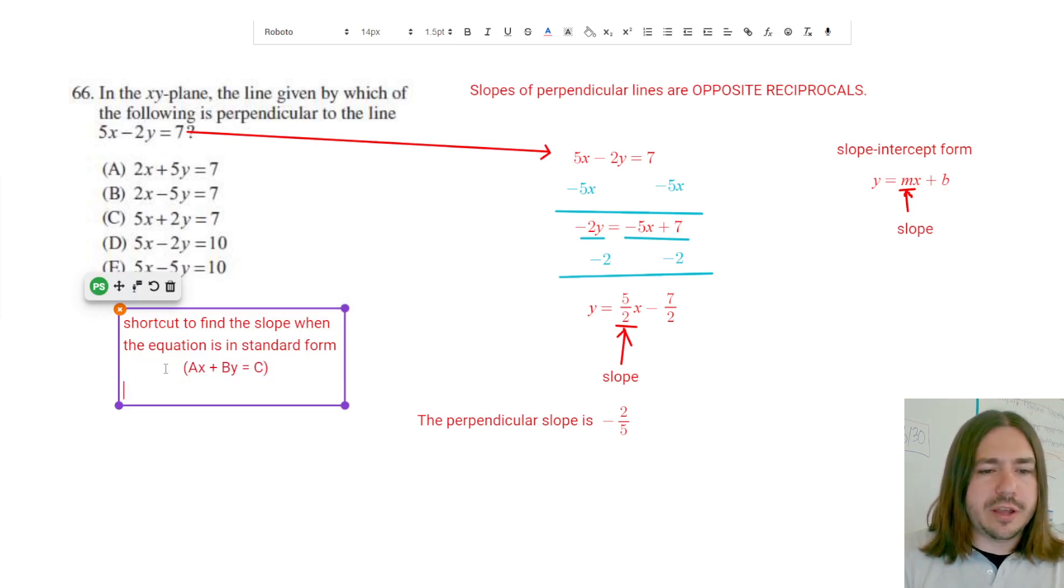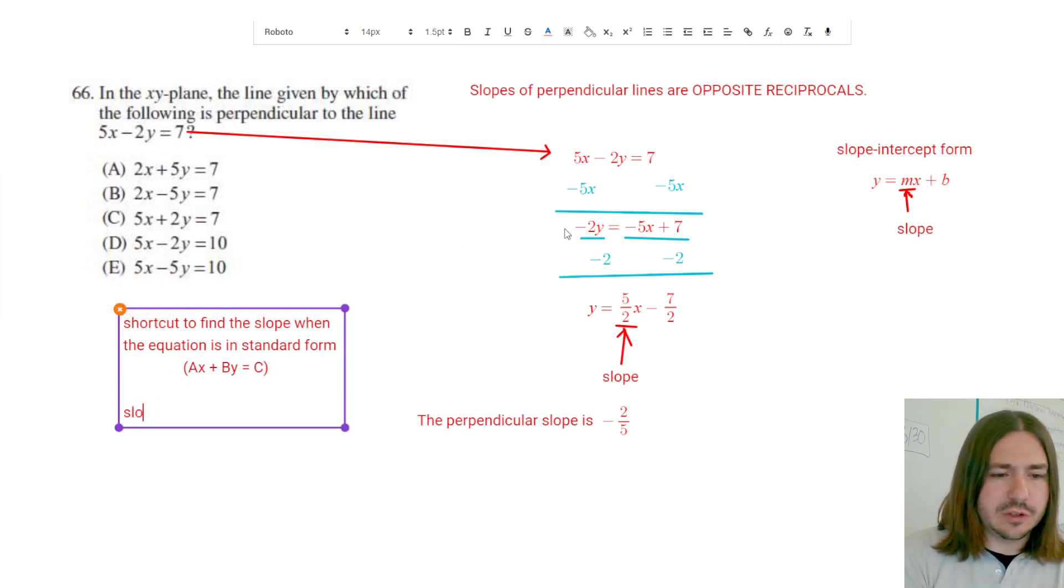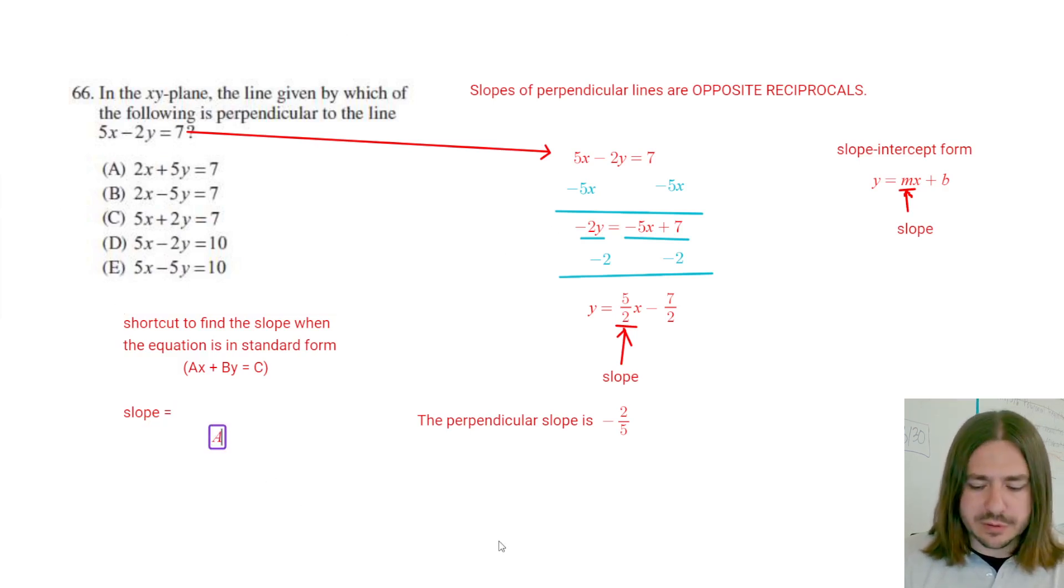So the shortcut here is going to be, we're going to take that coefficient of a, which in this case was 5. So the slope is going to be the a value divided by the b value, which is the coefficient of y. But then because it's also the opposite, we need to throw in a negative sign there. So that's what we got here, right? 5 divided by negative 2 would have been negative 5 over 2. But if I negate that, it would be positive 5 over 2. So what I can do is I can use this little shortcut to find the slopes of all these other ones.